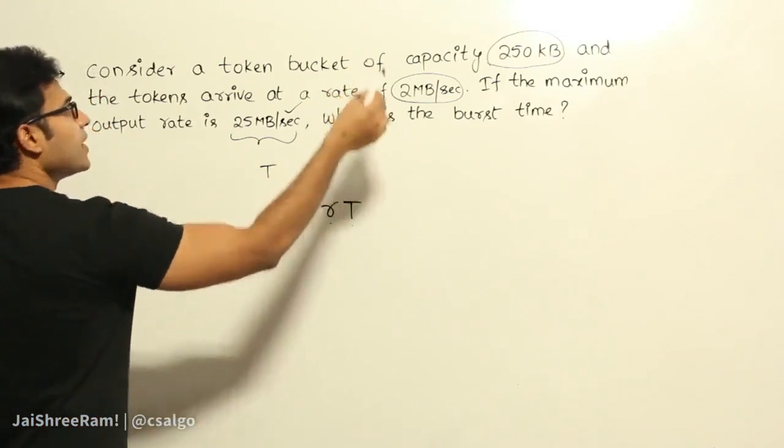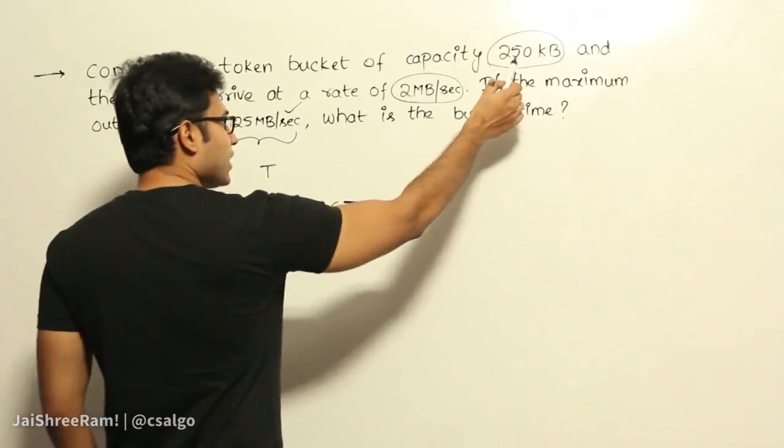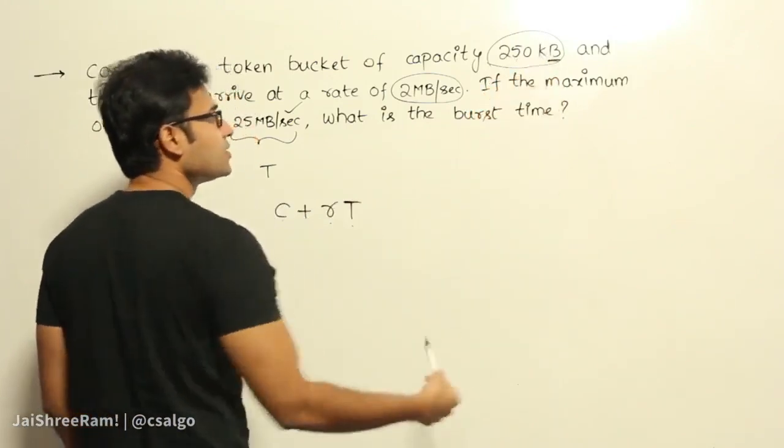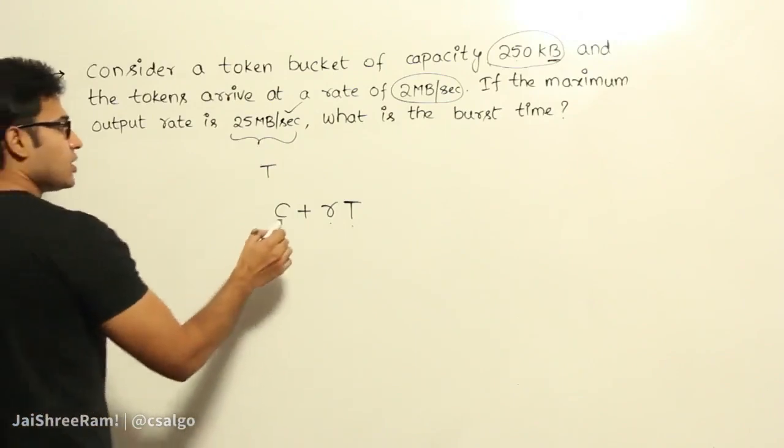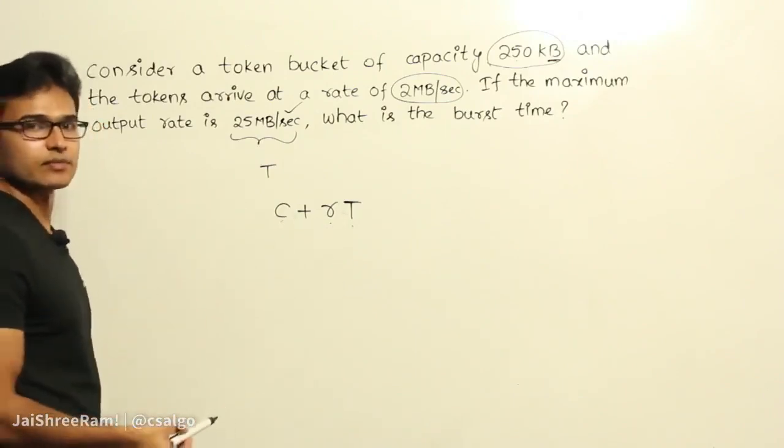So here they are talking about only bytes. So whenever they say the token, the capacity is KB, it means they are talking about the tokens in terms of bytes. Every byte is a token. Instead of packet, they are talking about bytes here. Now, this is the total number of bytes we could send out in time T, right?